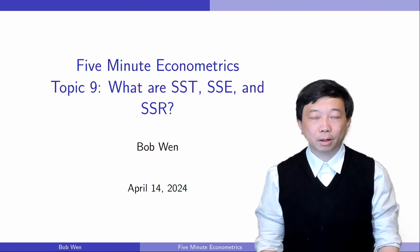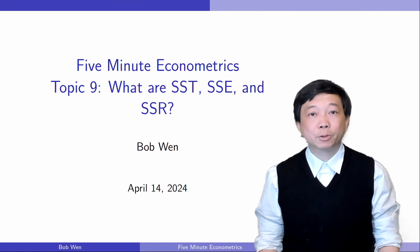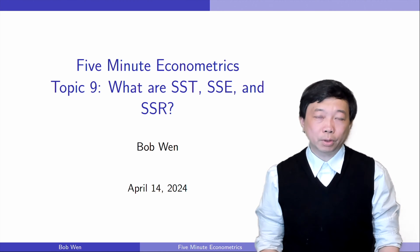SST is the abbreviation for total sum of squares. SSE is the short form of explained sum of squares and SSR is residual sum of squares.